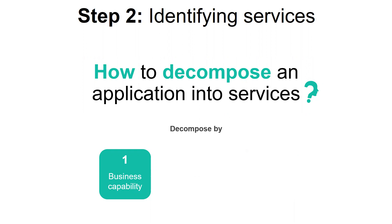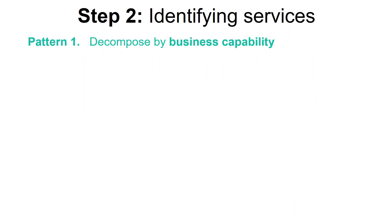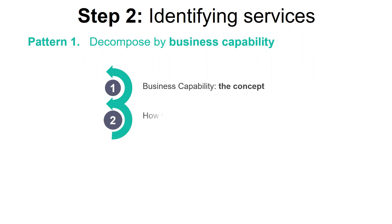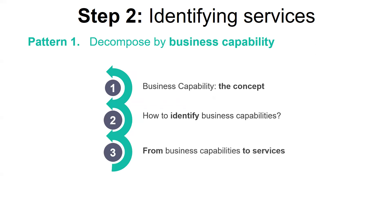Let's look at the first strategy, which defines services corresponding to business capabilities. To well explain how the strategy helps decomposing a system into services, I will structure the content like this: one, presenting the business capability concept; two, describing the way we can identify business capabilities; three, how to link the obtained business capabilities to services; and four, discussing the key benefits of using such an approach.